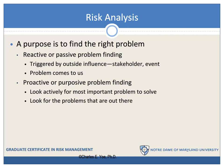There are basically two ways that you find the right problem. One would be reactive or passive problem finding. This is when a problem is triggered by some outside influence — perhaps a stakeholder, an event, something usually beyond your control that causes the problem to come to you. The classic example is when a problem knocks down your door on a Friday afternoon when you're getting ready to go home for the weekend.